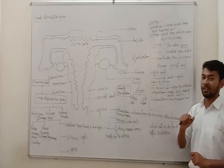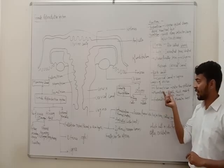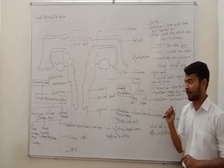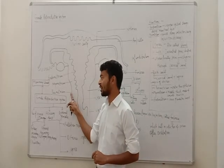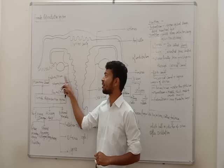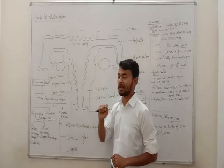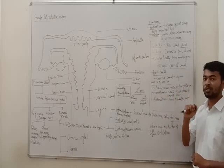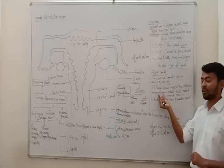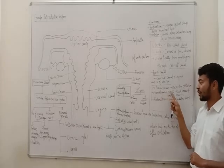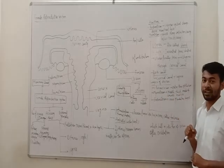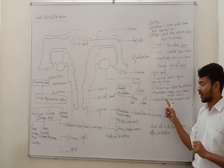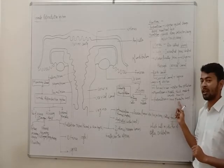The uterine wall is made up of three layers: perimetrium, myometrium and endometrium. The outer layer is the perimetrium, which is made up of thin epithelium. The middle layer is the myometrium, which is a thick layer made up of smooth muscle, so it helps in contraction. The third is the endometrium, the inner layer, which is of glandular nature.